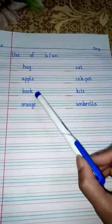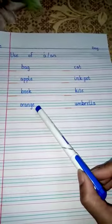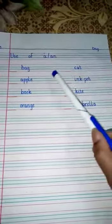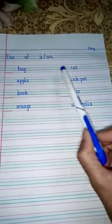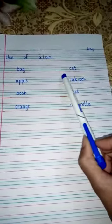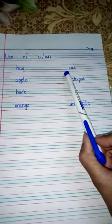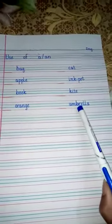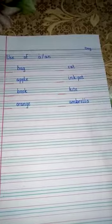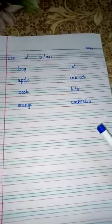Then in front of bag you can give three finger space here, and then underline the line, and again give one finger space and write: cat, ink pot, kite, umbrella. Now when you have done this.